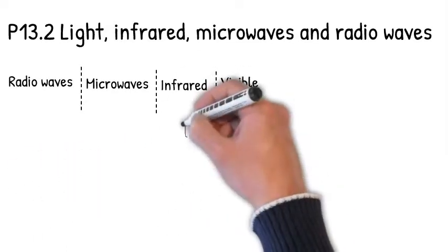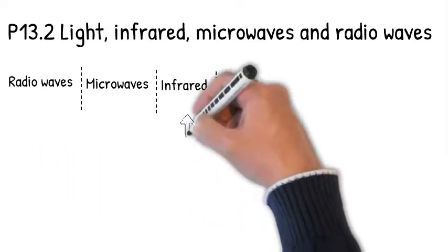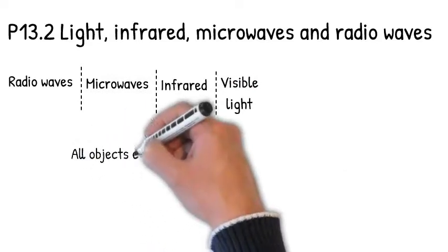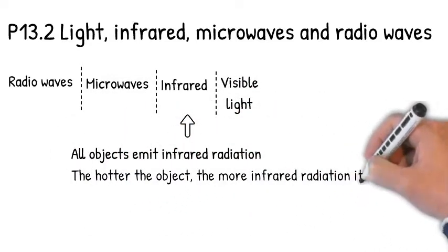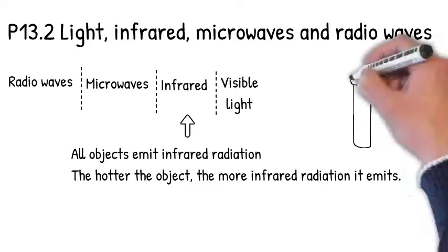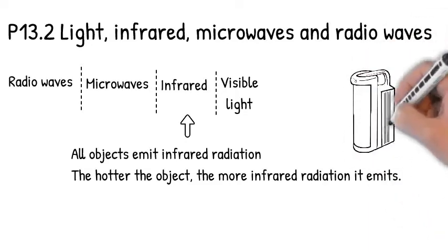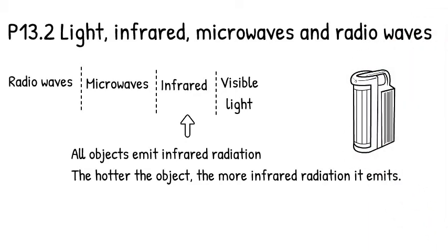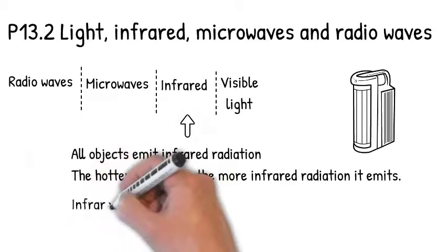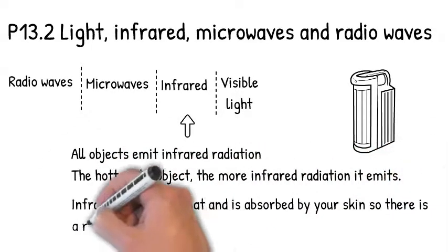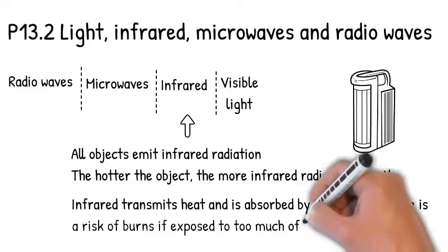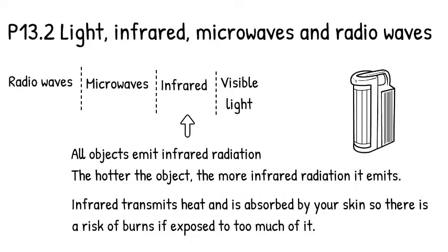So now let's look at infrared radiation. All objects emit infrared radiation. The hotter the object, the more infrared radiation it emits. This infrared heater, for example, will emit a lot of infrared radiation. Infrared transmits heat and is absorbed by your skin, so there is a risk of burns if exposed to too much of it.